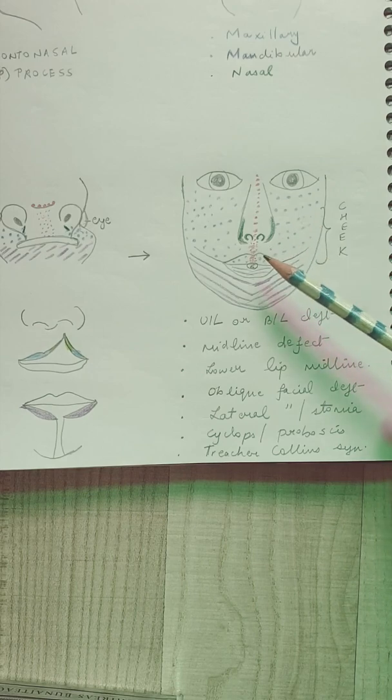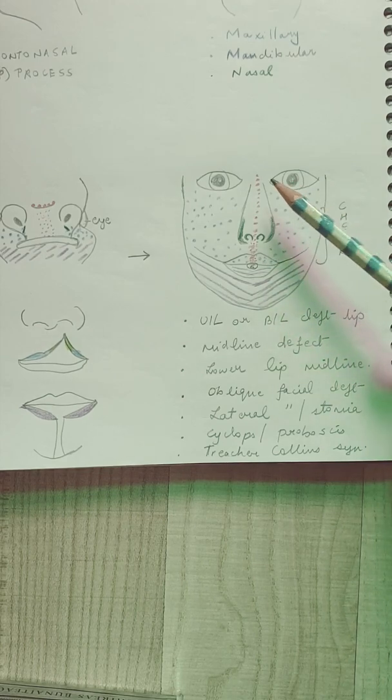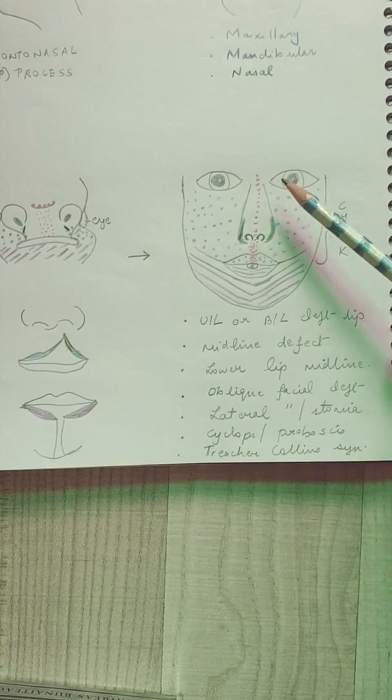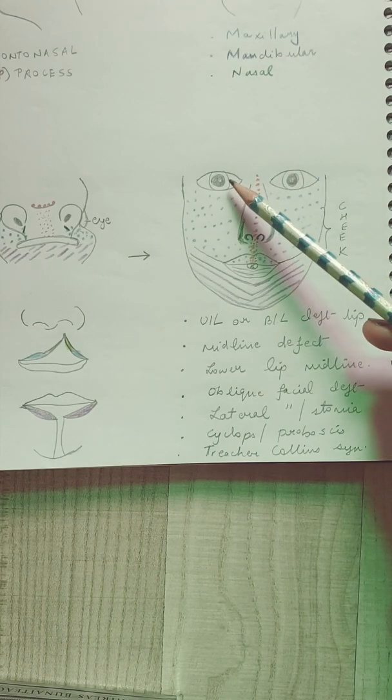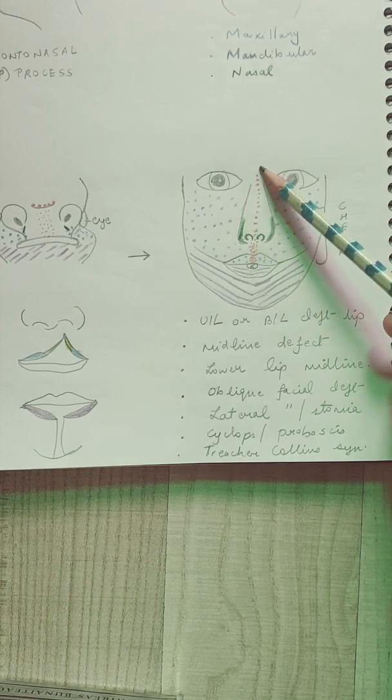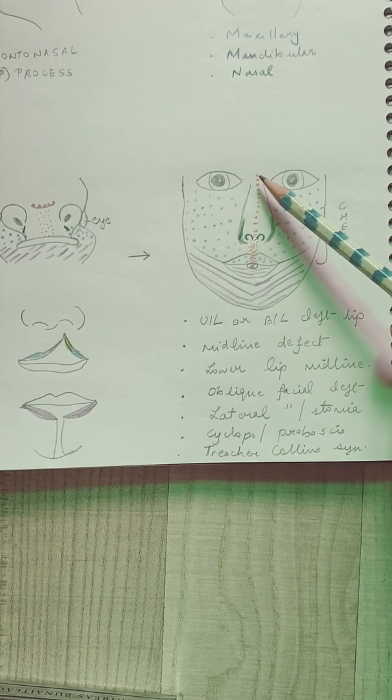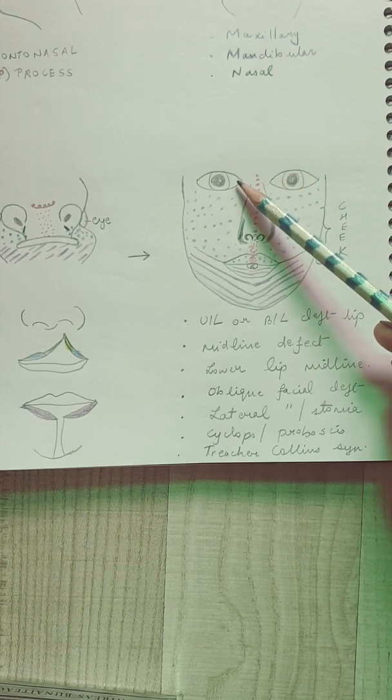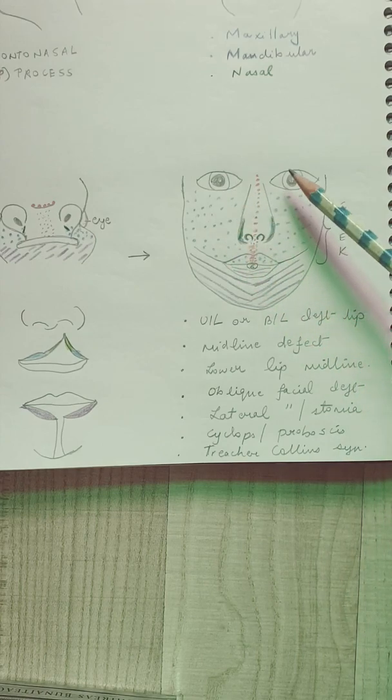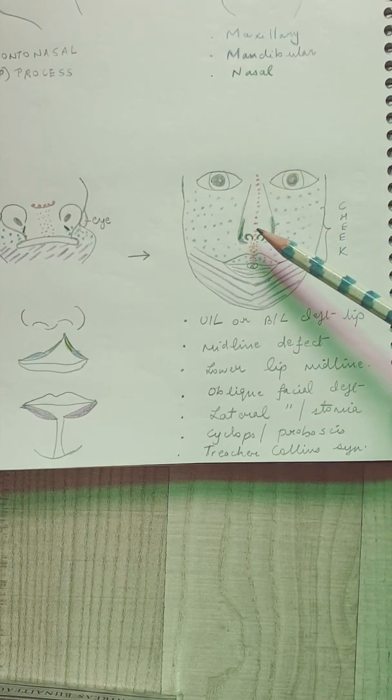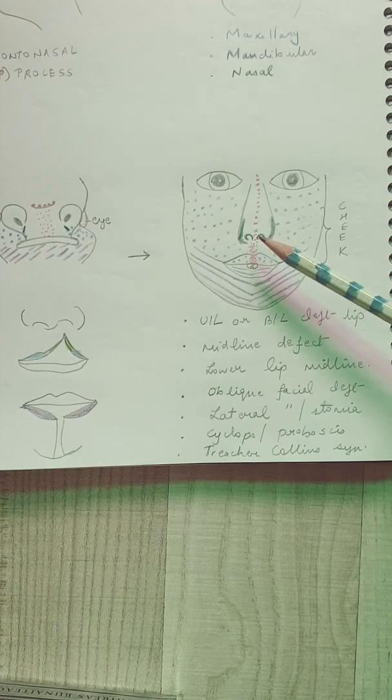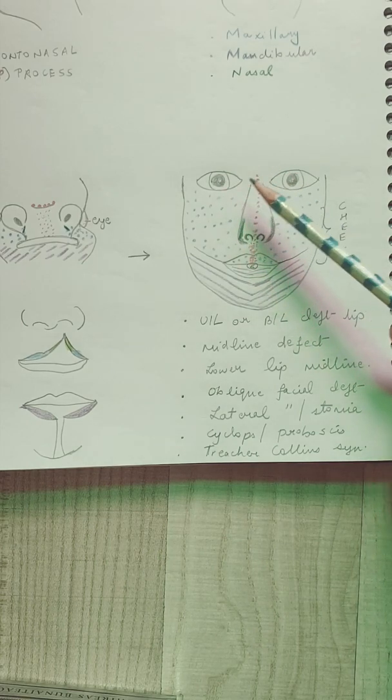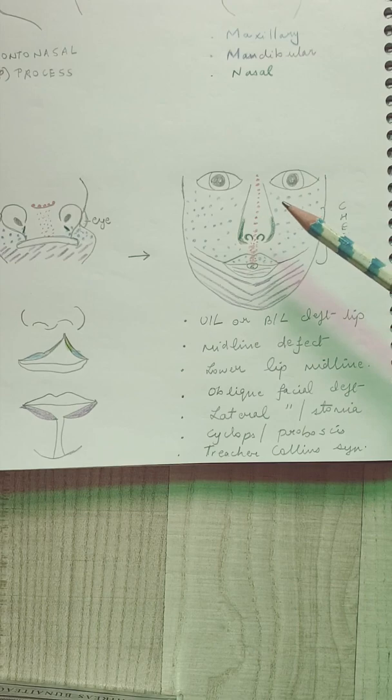Cyclops or proboscis, something which was important even in ancient times, along with hypertelorism, are certain terminologies you need to know. In the case of proboscis there will be a single nasal protuberance, the primitive one, and there can be fused eyes which is the cyclops. There can be a bifid nose where these processes have failed to fuse with each other, and there can be a condition also known as hypertelorism where the distance between the pupils is more.